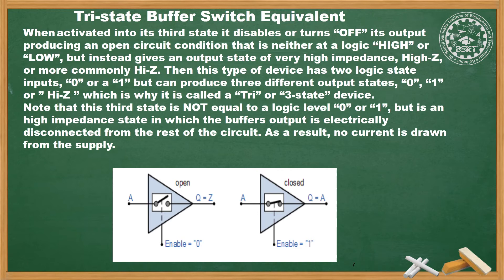As a result, no current is drawn from the supply. In the diagram, in the first case enable is equal to 0. When enable is 0, it is as good as disconnected — the switch will be open. When enable is 1, the switch is closed or connected, so the input side is connected to the output side — a closed switch condition.